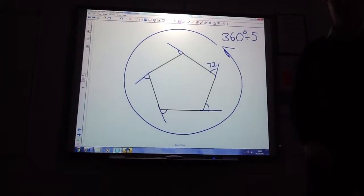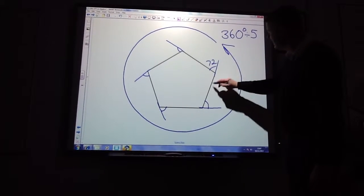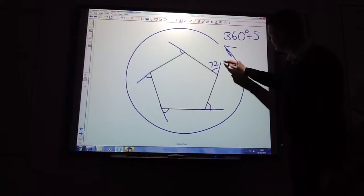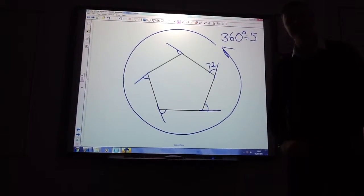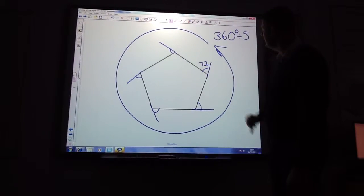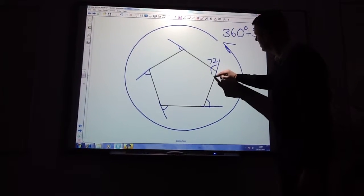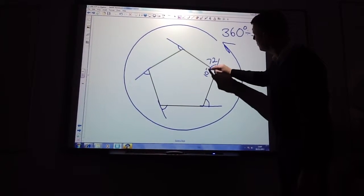To find the internal angle, I can see here that I've got a straight line. And angles on a straight line always add up to 180. So 180 take away 72 would give me 108.